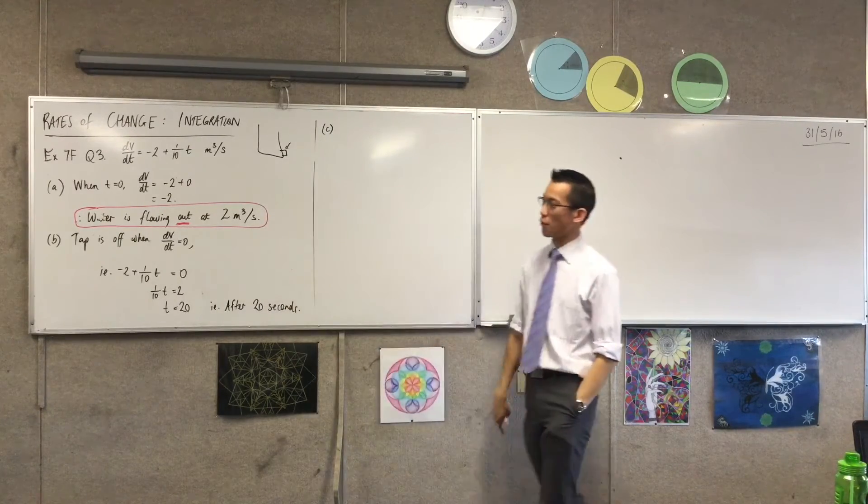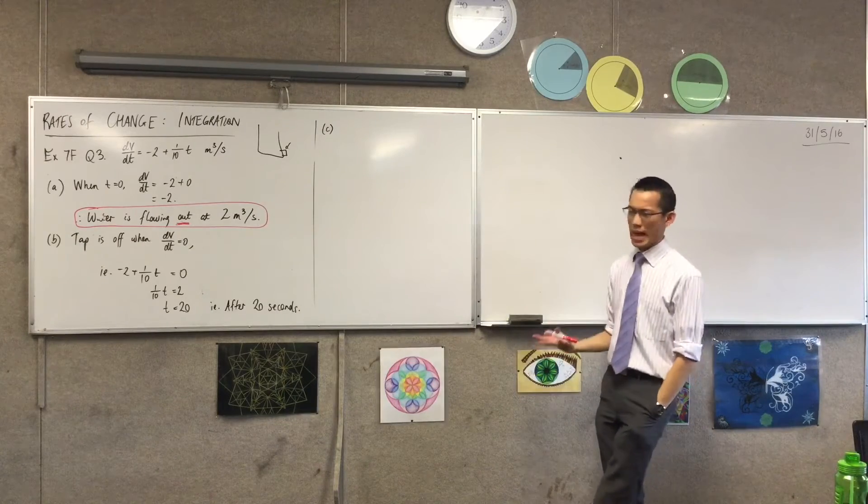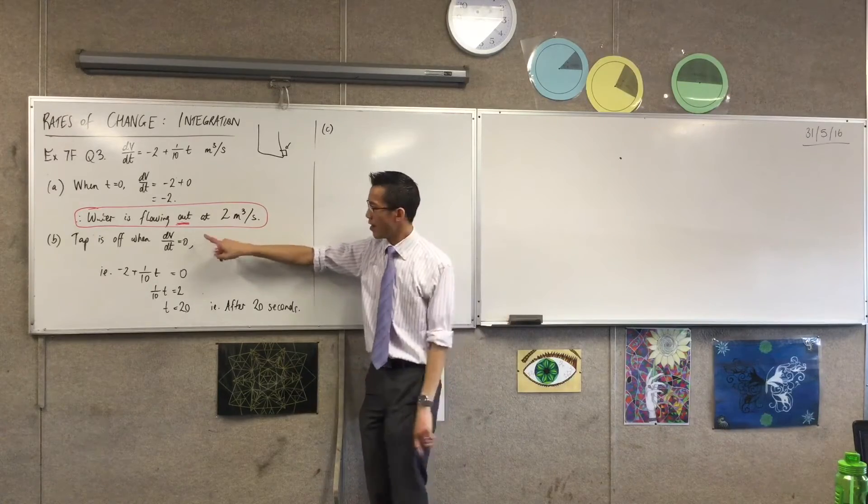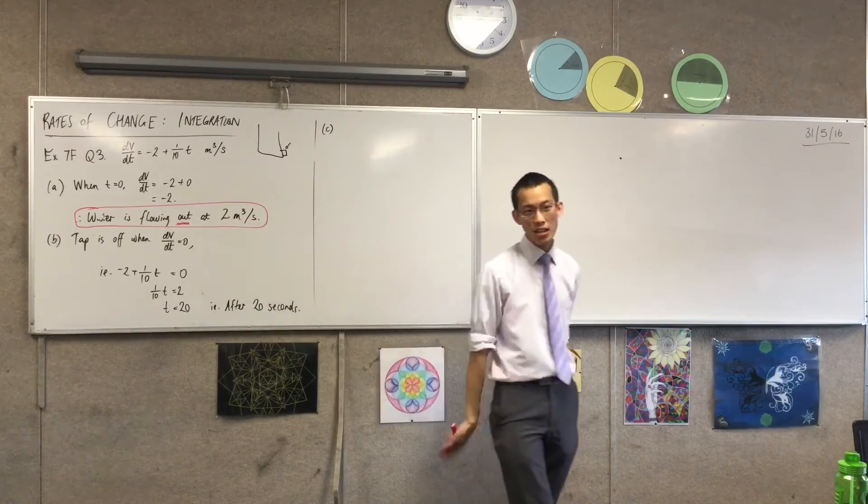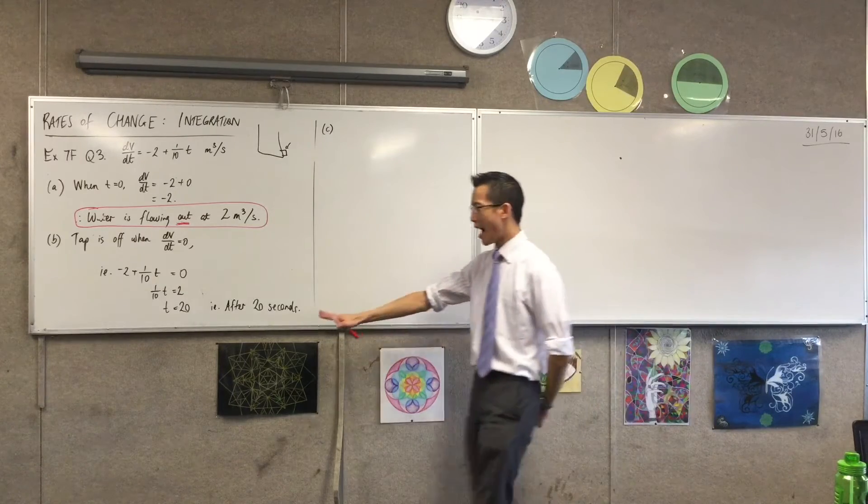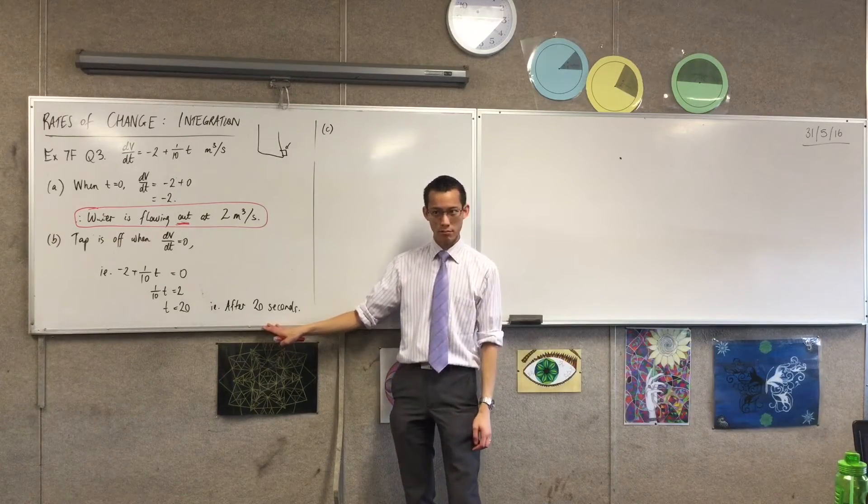Part B, same thing that we saw before. The flow rate—when is the tap switched off? The tap is fully switched off when the volume isn't changing anymore. So that's dV/dt. So you solve for that, you get your value and again, I can include and that's where I bring my units in.